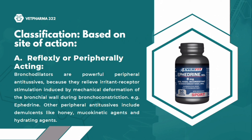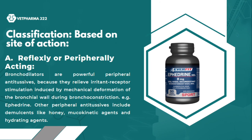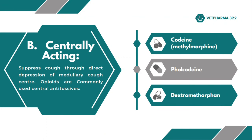Other peripheral antitussives include demulcents like honey, mucokinetic agents, and hydrating agents. The other classification of antitussives is the centrally acting antitussives, which suppress cough through direct depression of the medullary cough center.